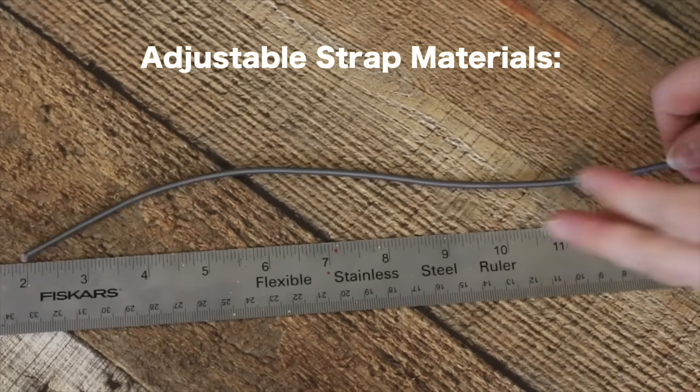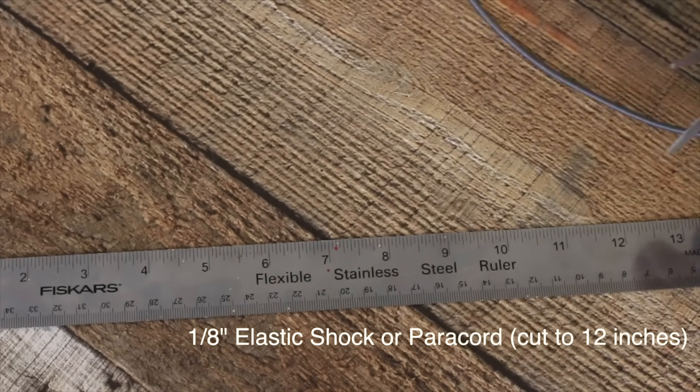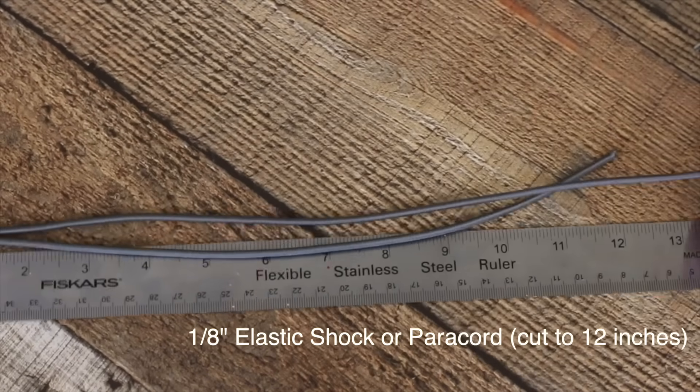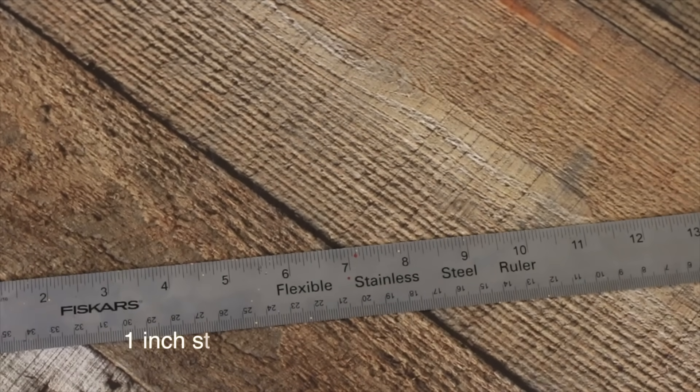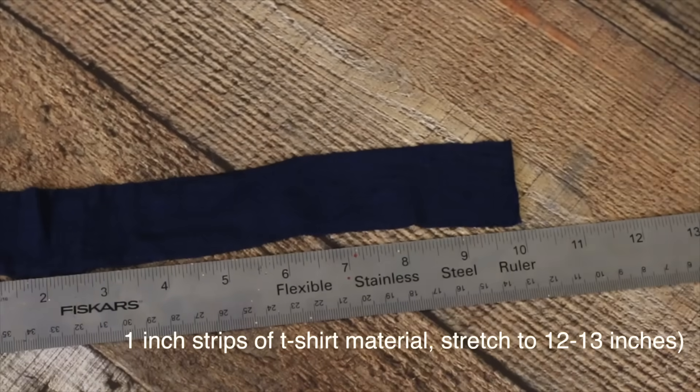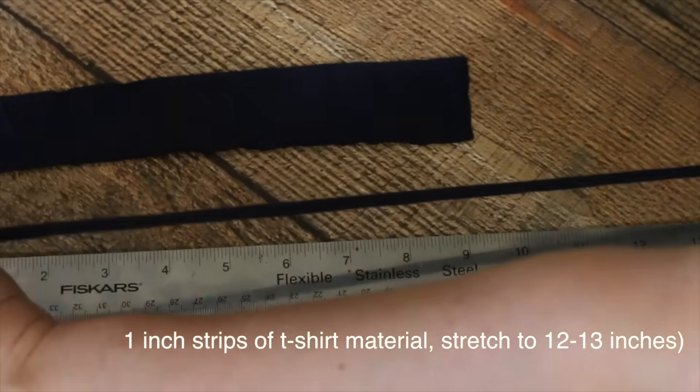I know one of the other materials that are hard to find is elastic, so here are a few acceptable alternatives. I purchased 1 1/8 inch round shock cord or paracord in bulk. Cut two pieces of paracord 12 inches long. If you can't find paracord, you can cut t-shirts into 1 inch strips then stretch them out to 12-13 inches.